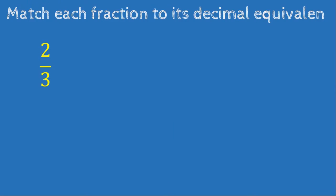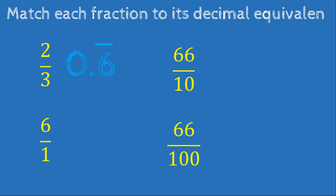Now we match each fraction to its decimal equivalent. We have 2 over 3, 6 over 1, 66 over 10, and 66 over 100. Two-thirds equals 0.666 repeating. 6 over 1, dividing by 1 gives just 6, or 6.0. 66 over 10: move the decimal once left, giving 6.6. And 66 over 100: move the decimal twice left, giving 0.66.